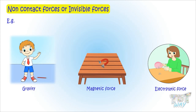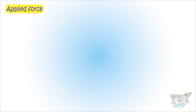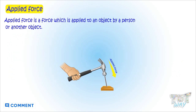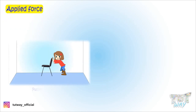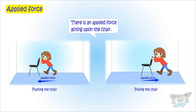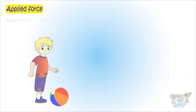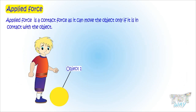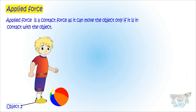Now let's learn each type of force one by one. First is applied force. Applied force is that force which is applied to an object by a person or another object. If a person is pushing or pulling an object, let's say a chair, then there is an applied force acting upon the chair. Applied force is a contact force, as it can move the object only if it is in contact with the object.